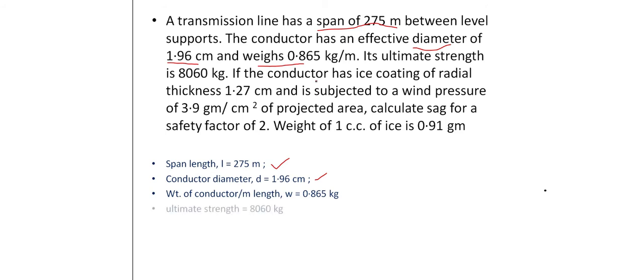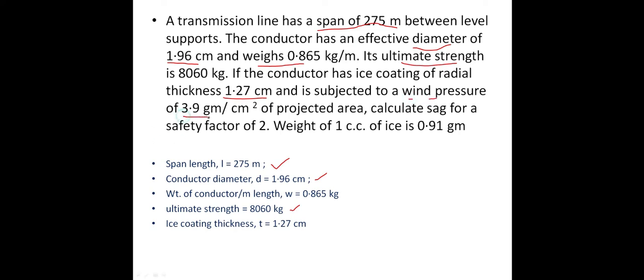If the tension is very low, SAG increases. The conductor has a high scope of radial ice thickness of 1.27 cm, and wind pressure of 3.9 grams per centimeter square of projected area. Wind pressure and weight of ice are not given directly — only ice coating thickness is given. We have to find ice weight and wind pressure. The SAG factor is also given.